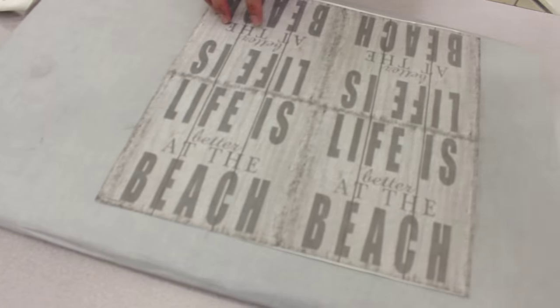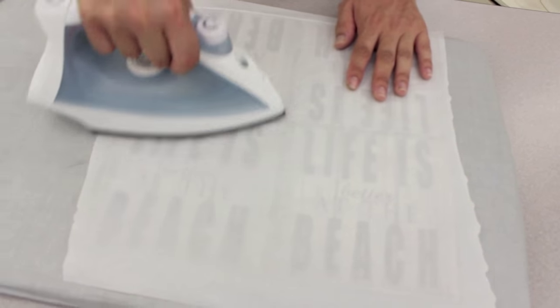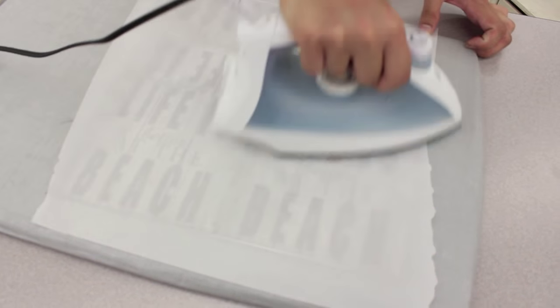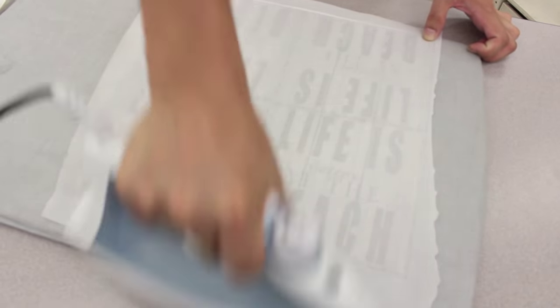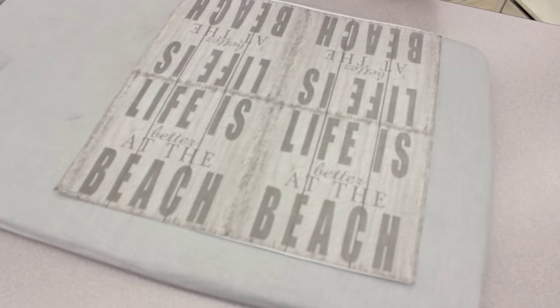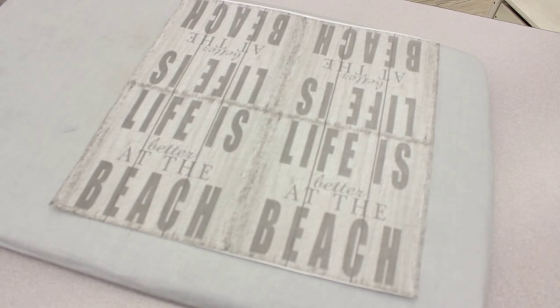All right, now we flipped it over. We've got the parchment paper on top now of our project and evenly spreading the heat with the dry iron. This is so we just get a really good bond. All right, set the parchment paper aside.